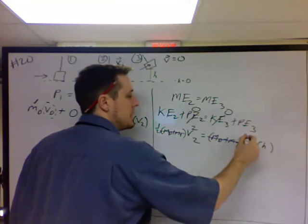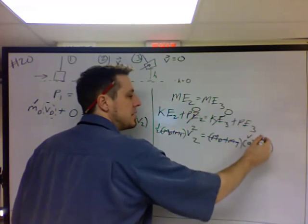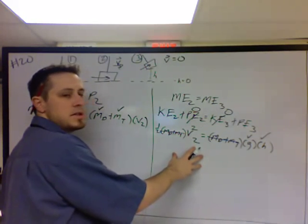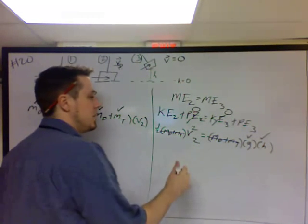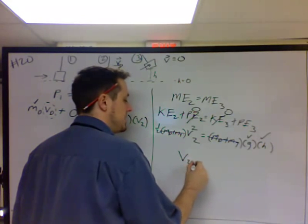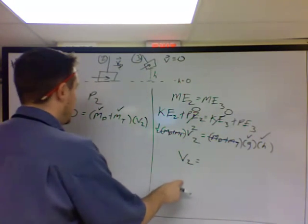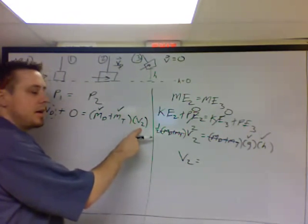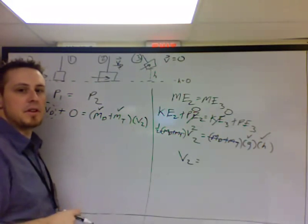And now we know what G is. H was given in the problem. So we can solve this equation for V2. Once we get our answer here for V2, we can plug it in over here and get our answer for velocity of the dart.